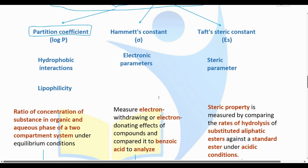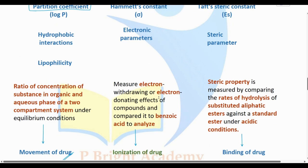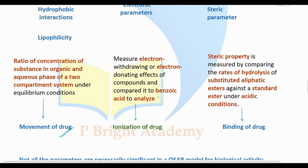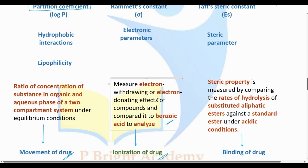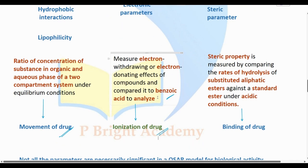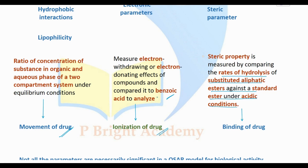The Hammett constant takes into consideration the electron-withdrawing and electron-donating effects. We take into consideration benzoic acid and drug ionization. The Taft steric parameter Es takes into consideration the rate of hydrolysis of a substituted aliphatic acid against a standard acid under acid conditions, relating to binding of the drug.